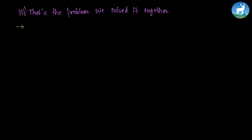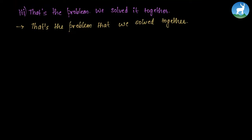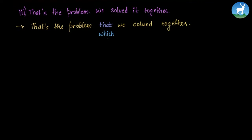'That's the problem. We solved it together.' We can say 'That's the problem that we solved together.' We can also use which: 'That's the problem which we solved together.' Both relative clauses are correct in this sentence because we're talking about an idea of solving a problem.